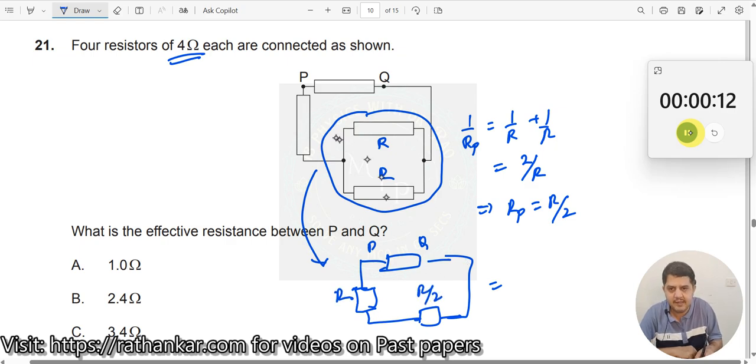This is your R. Now, let me substitute here. This will be 4. R by 2 will be 2 here. So, 6 over here.